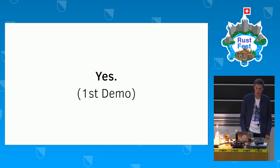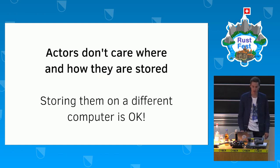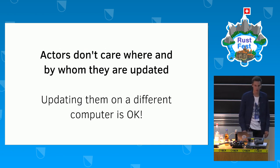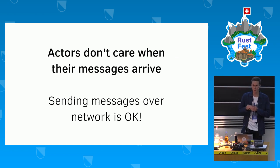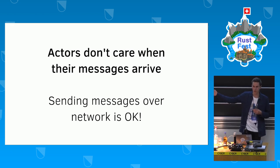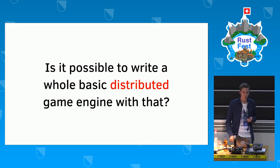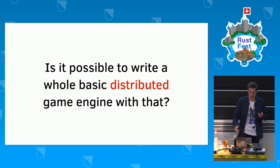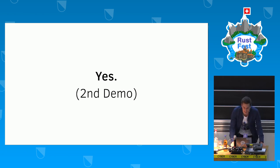Now let's take these actor freedoms to their logical conclusion: actors don't care where or how they're stored, so storing them on a different computer is fine. They don't care where or by whom they're updated, so updating on a different computer is fine. Since everything is asynchronous, sending messages over the network is also fine. Is it possible to write a distributed game engine on that? The answer seems to be yes — leading to the second, much riskier demo.